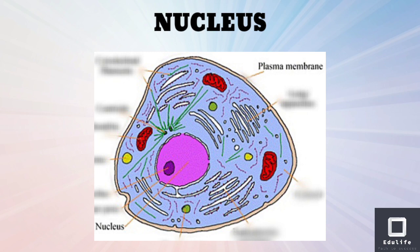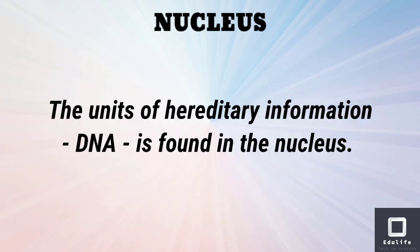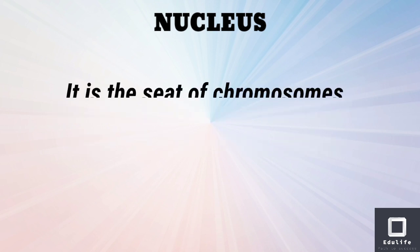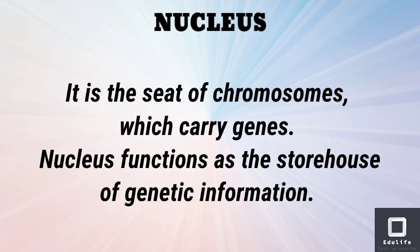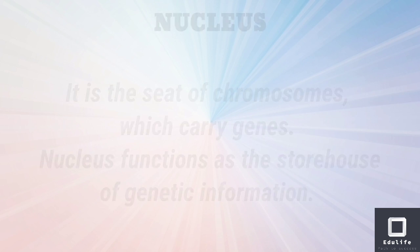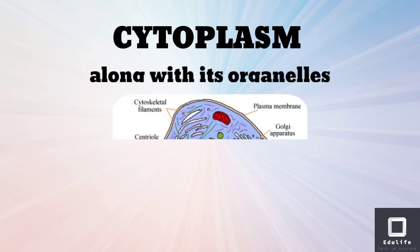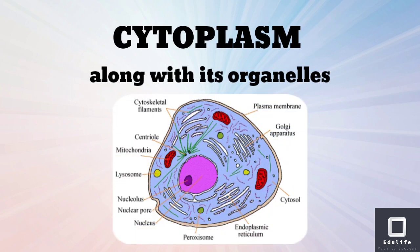The nucleus contains genetic material — truly genetic material — in which chromosomes are very compact. This genetic information has been stored and passed from generation to generation. The third part is cytoplasm and organelles.